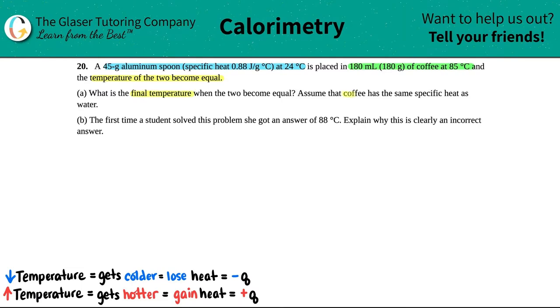Assume that the coffee has the same specific heat as water. Alright, let's get down to business. They're shooting out keywords here—they're talking about specific heat, different temperatures, and basically bringing two substances together. In this case, an aluminum spoon is being placed in a cup of coffee.